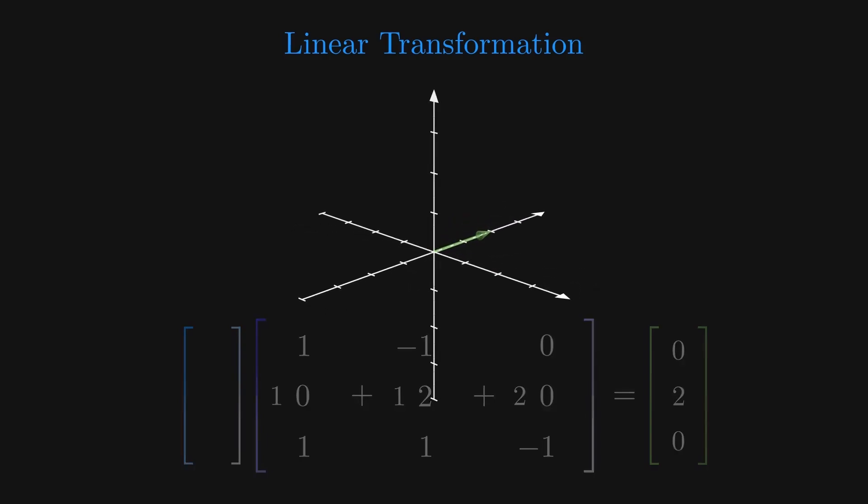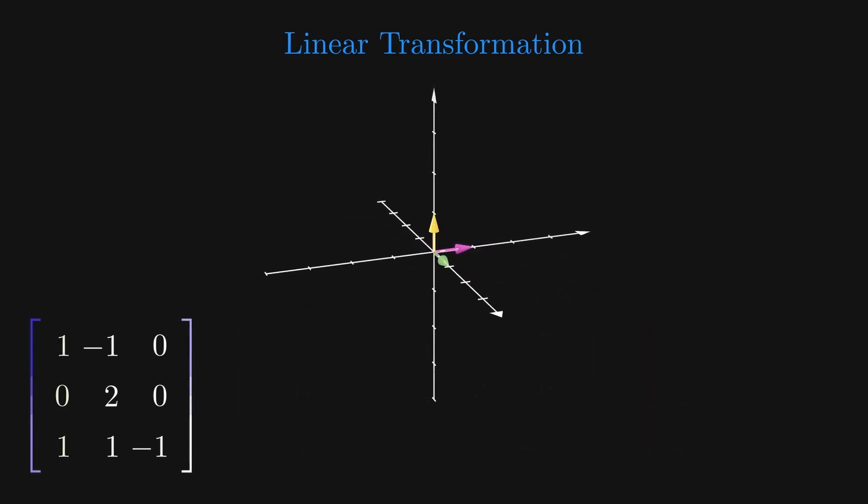If we want to know where our unit x, y, and z vectors go, all we have to do is read off in order the columns of our matrix.